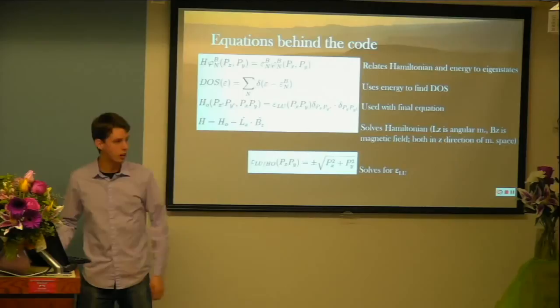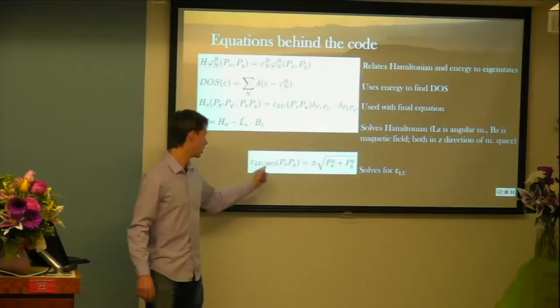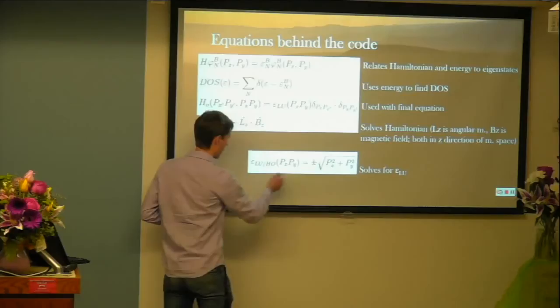Okay, so LU is the lowest unoccupied molecular orbital, highest occupied. And so for this one, lowest is calculated using positive, highest using negative.